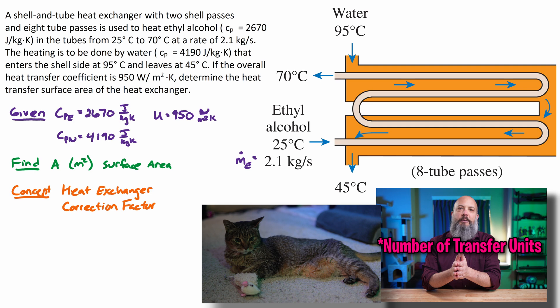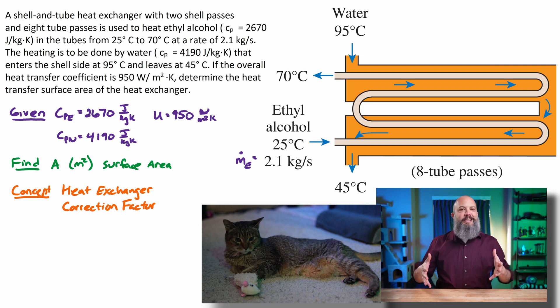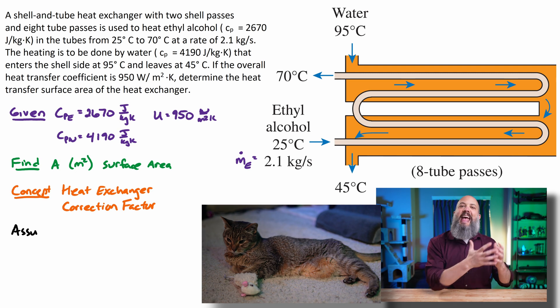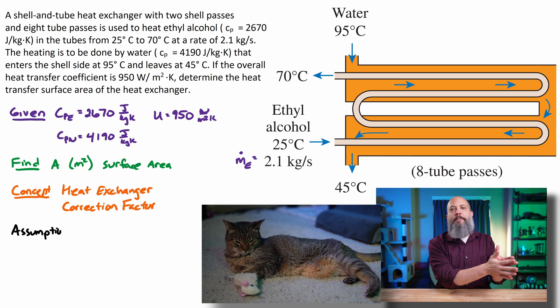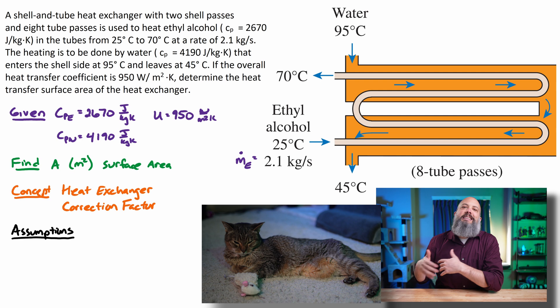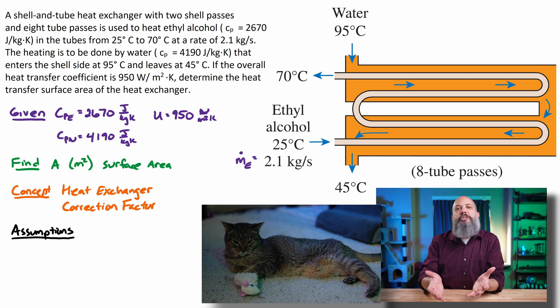The other type of heat exchanger problem is an NTU, net thermal units problem. That's where the size of your heat exchanger is known and you're looking for exit temperatures. So if you have size and you're looking for exit temperatures, that's NTUs. If you have exit temperatures and you're looking for a size, that's going to lend itself towards a log mean temperature difference solution type.